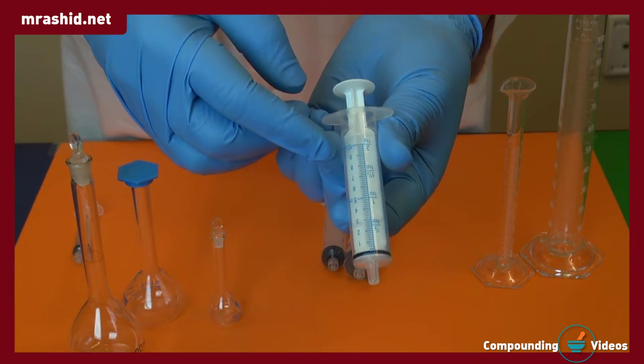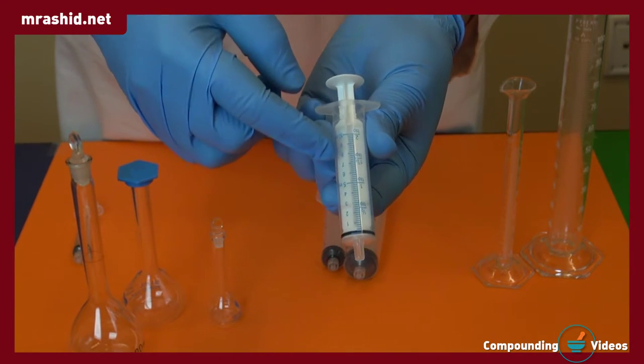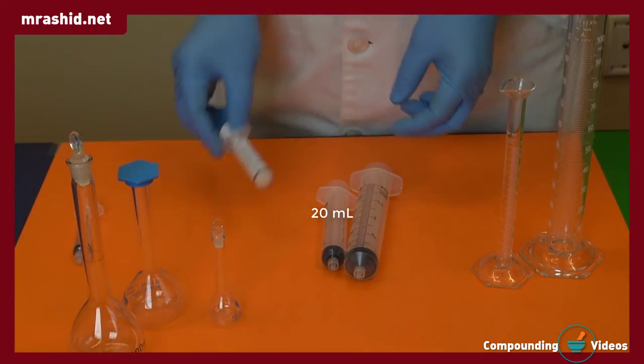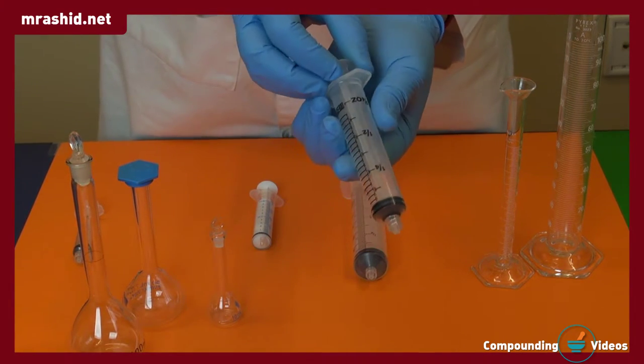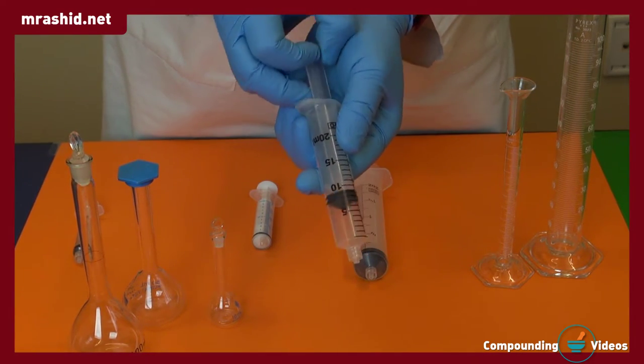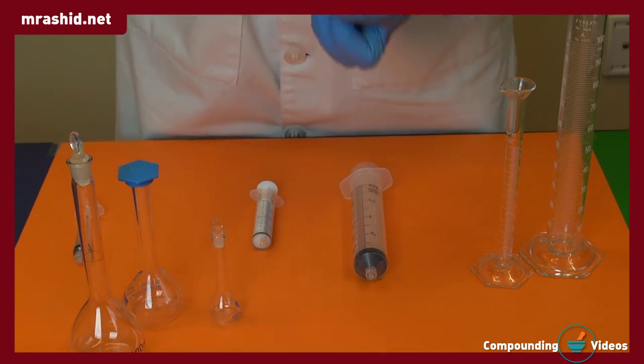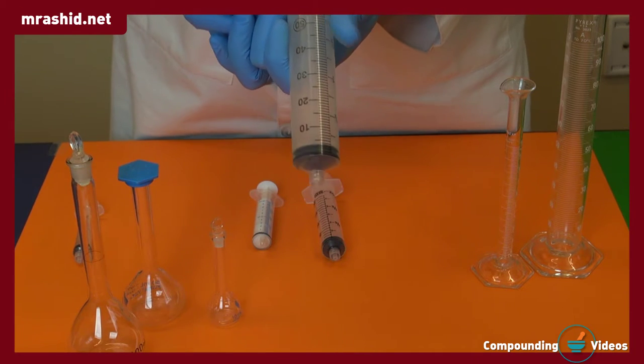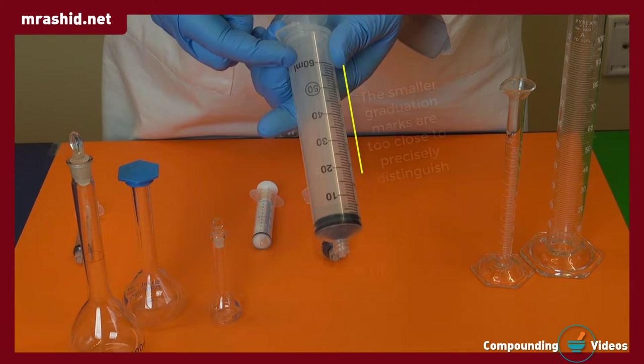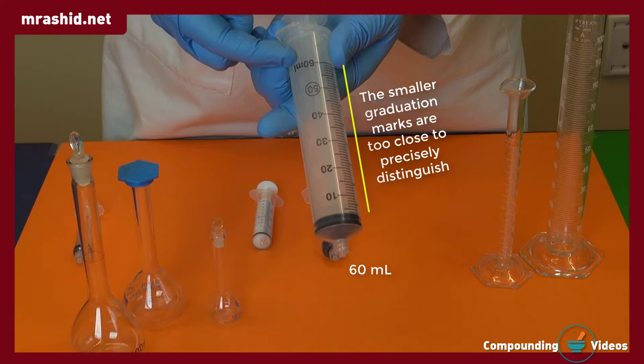This one is 20ml. It still may be used with a slightly higher degree of error. But this one is the least accurate of these because its capacity is 60ml, which is six times our measurable amount.